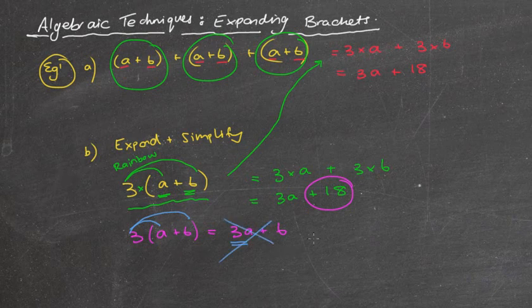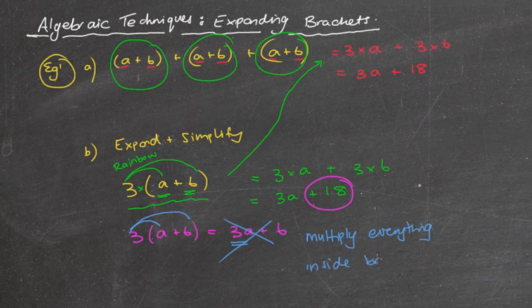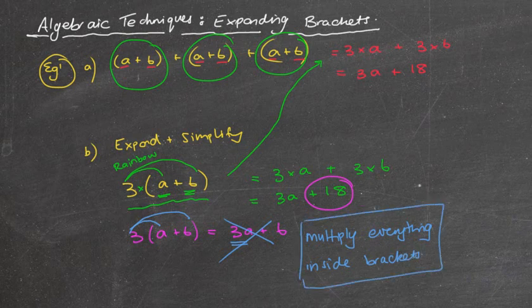We must make sure to multiply everything inside the brackets. So multiply everything that's inside the brackets by whatever is at the front. So for the most part, this is pretty easy stuff. There are, of course, some trickier questions.